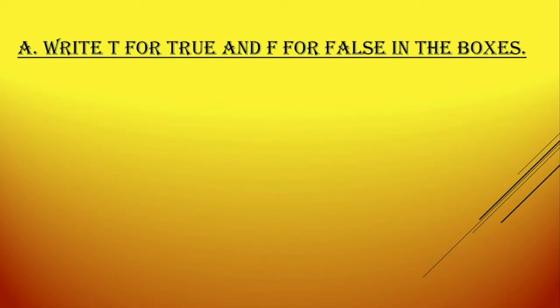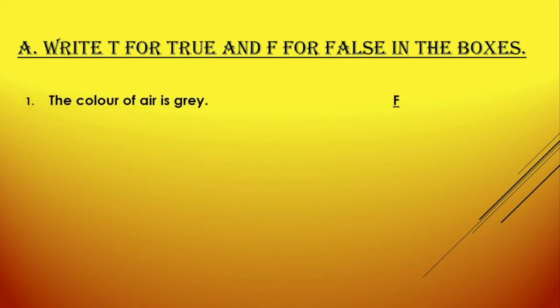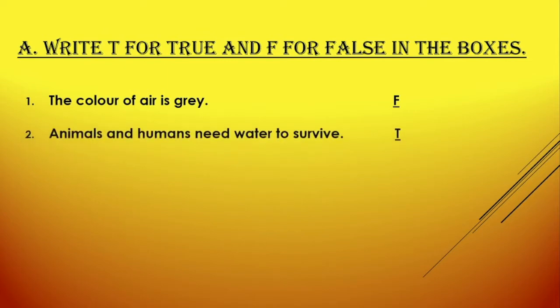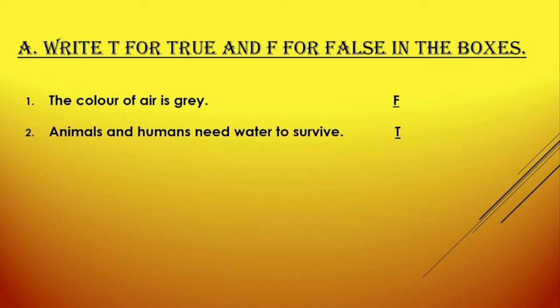Write T for true and F for false in the boxes. The colour of the air is grey — False. Air is colourless. Animals and humans need water to survive — True. Yes, all living organisms need water to survive.